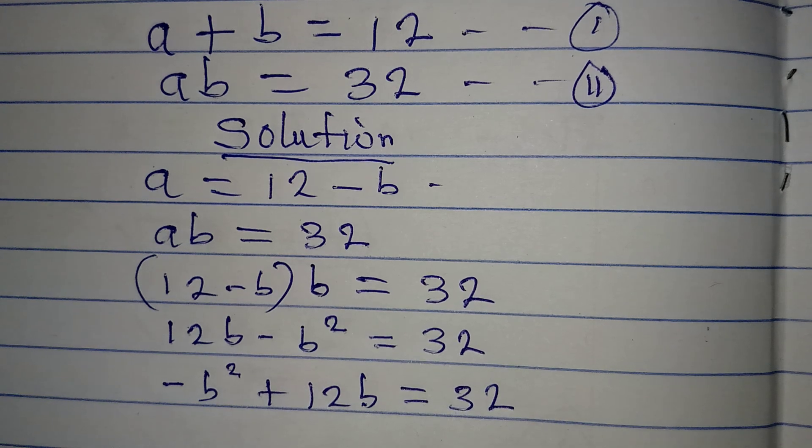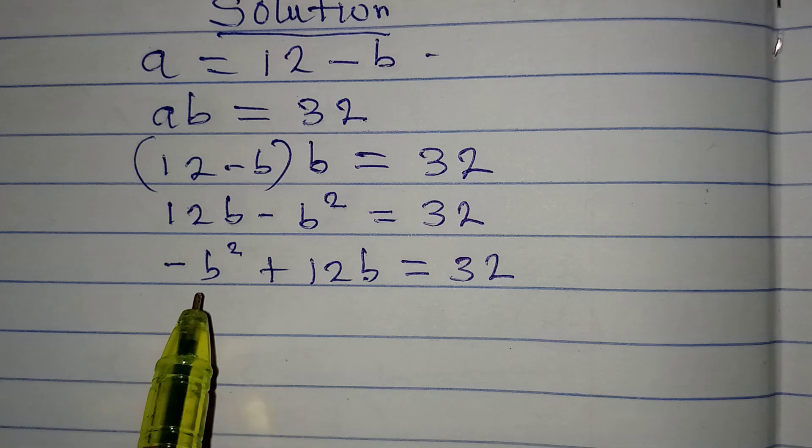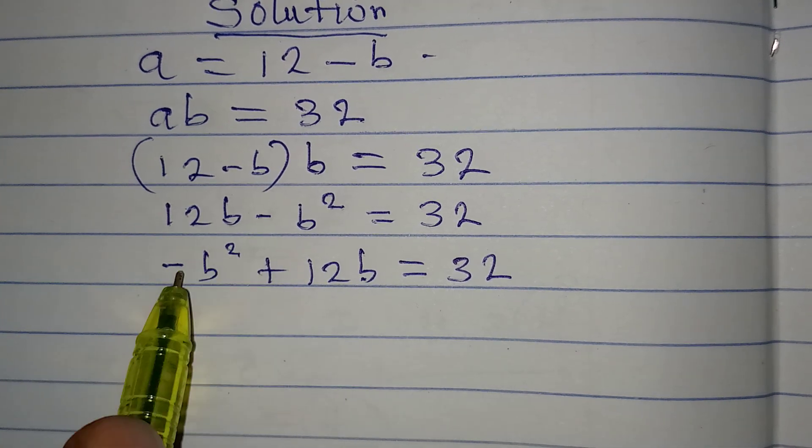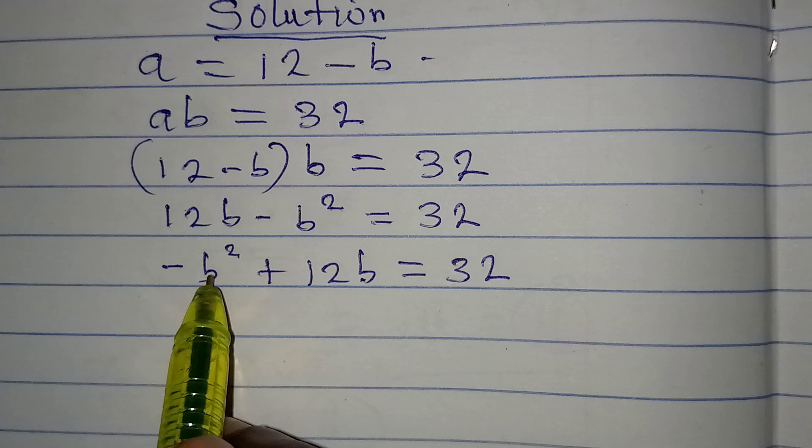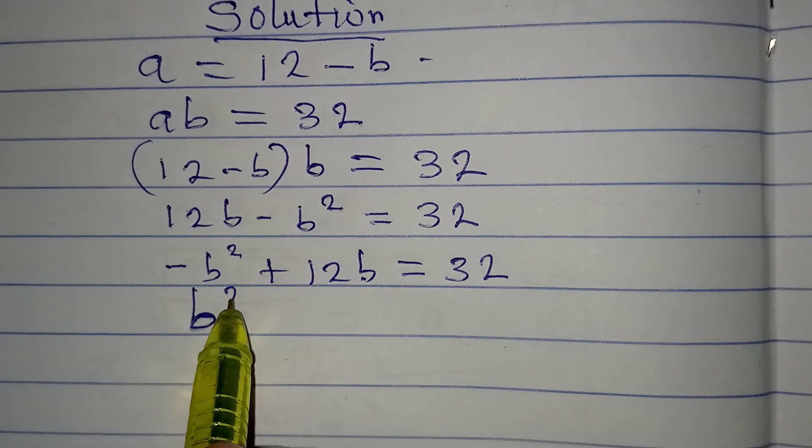Now the next thing I will do is to multiply both sides by negative 1 to make sure that the first term here is not negative. So if I multiply this by negative 1, then I will have plus B, that is B squared.